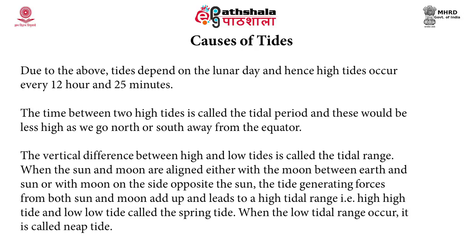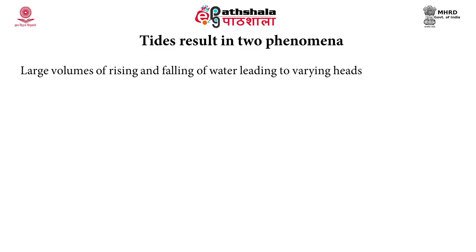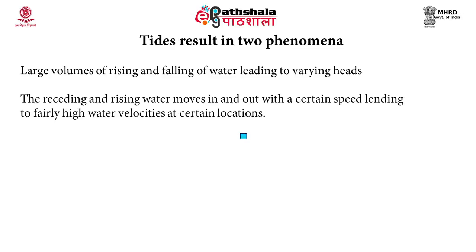Tides depend on the lunar day, and high tides occur every 12 hours and 25 minutes. The time between two high tides is called the tidal period, and tides would be less high as we go north or south away from the equator. The vertical difference between high and low tide is called the tidal range. When the sun and moon are aligned, the tide generating forces from both add up, leading to a high tidal range called spring tide. When the tidal range is low, it is called neap tide. Tides result in large volumes of rising and falling water and fairly high water velocity at certain locations, and these can be harnessed for energy.